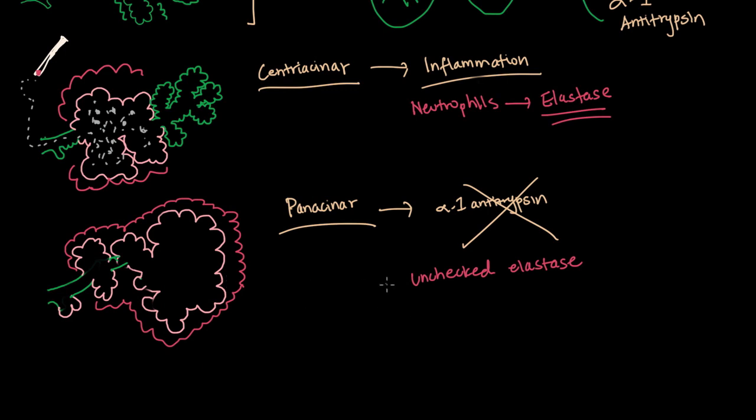Just as a side note, alpha-1-antitrypsin is made in the liver, and in this disease when there's deficiency, that means something in the DNA and the gene encoding for it has a mistake. All the misfolded protein can't leave the liver, leading to liver disease. But when we come to the lungs, we see panacinar emphysema.